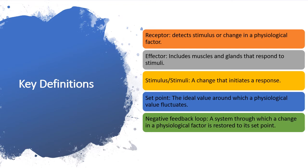An effector is like a response unit — it responds to things that have changed within your environment. For example, if someone sees a lion approaching the class, the eyes that see the lion would be the receptors, sending a message to the brain to say there's danger. The brain then sends signals to the effectors, which would be the legs — the muscles in the legs — because they are responding to the stimulus. A stimulus is just a change that initiates a response, such as an increase in blood glucose concentration after eating a meal.